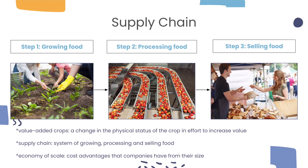There are many steps involved in food production, particularly in commercial agriculture. In most cases, the first step is growing food, including planting and harvesting. Then, the food has to be processed — in other words, packaged. During this process, agriculture products can turn into value-added crops, which involve a change in the physical status of the crop in an effort to increase value. Lastly, the food will be sold in the market. This entire system is known as the supply chain — the system of growing, processing, and selling food.